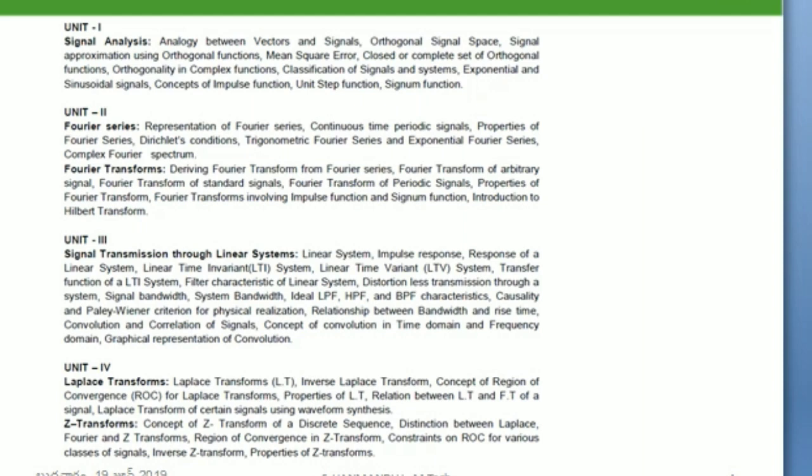Coming to the syllabus, there are five units. Unit one is an introduction to signal analysis and systems. We will discuss different types of signals, operations performed on signals, the orthogonality concept in detail, and how and when two given signals become orthogonal. We will also discuss elementary signals — their definitions, relationships, etc.